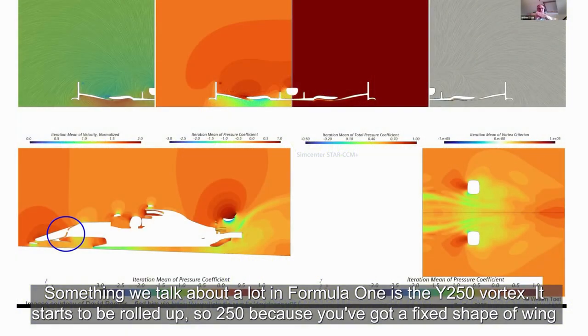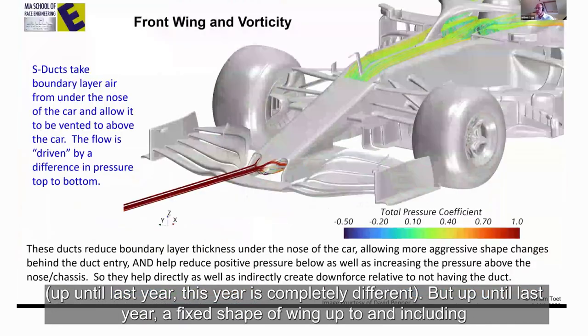Something we talk about a lot in Formula One is the Y250 Vortex. It starts to be rolled up at Y250 because you've got a fixed shape of wing up until last year.